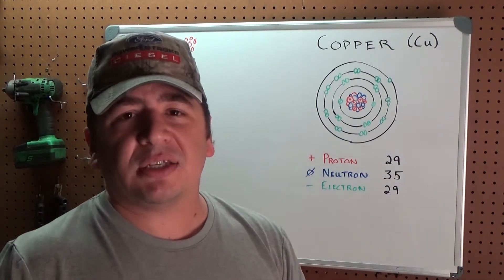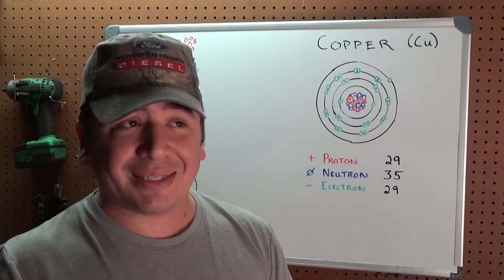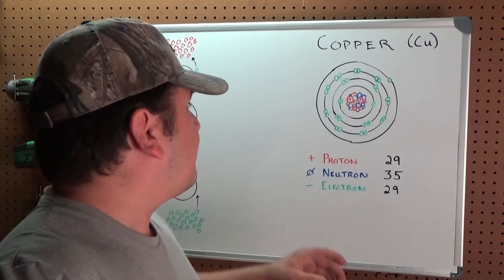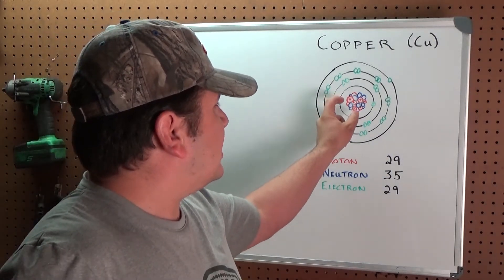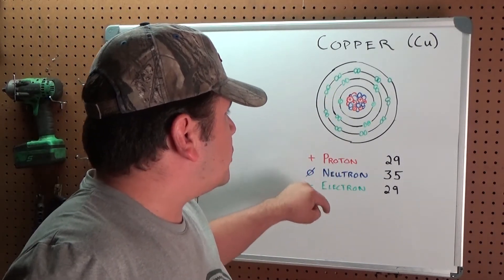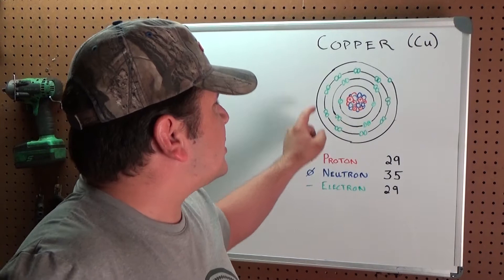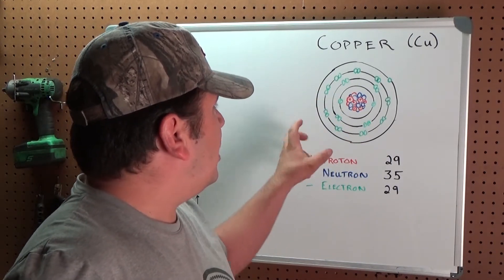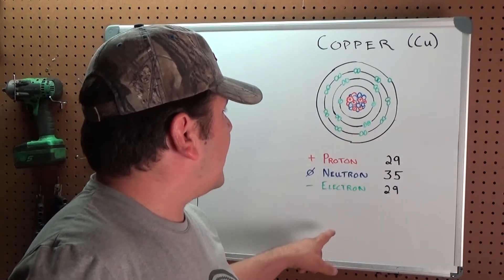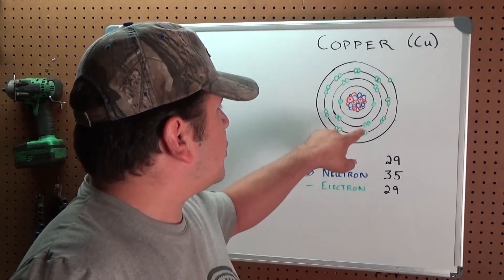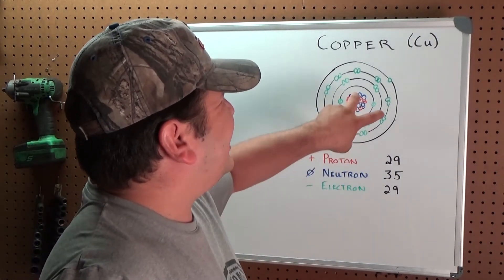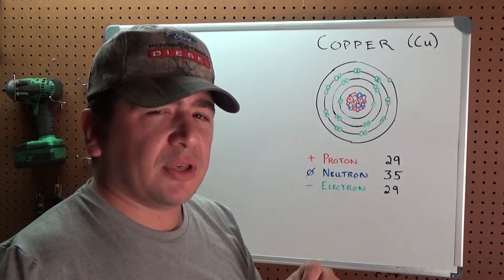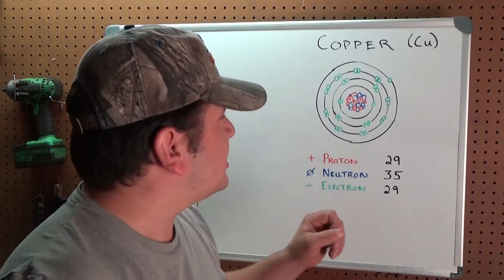Protons are positively charged and electrons are negatively charged, so when you have 29 protons and 29 electrons that's the lowest energy state — it's not excessively positively or negatively charged. The electrons are arranged in shells outside the nucleus: first shell has 2, then 8, then 18, then 1 — that adds up to 29.